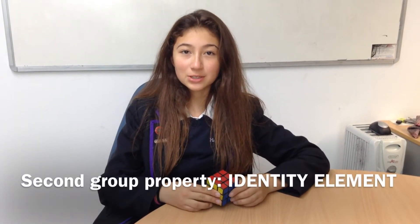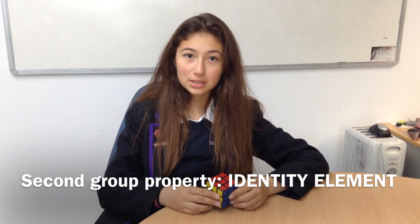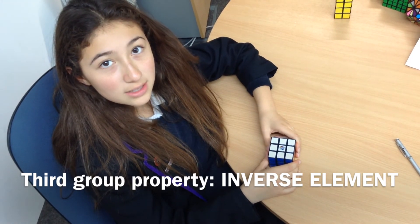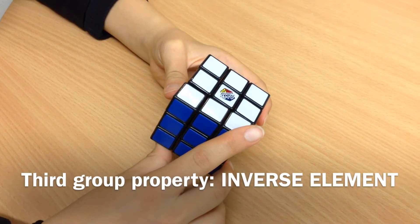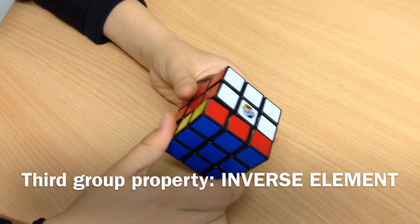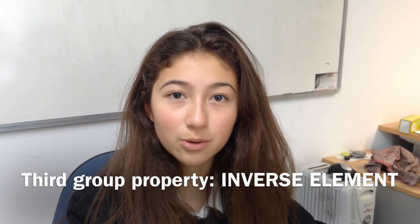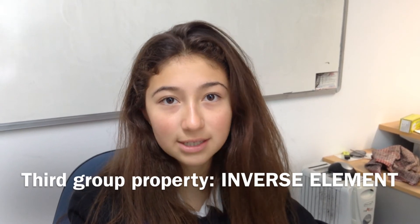The identity element is do nothing, in other words, no permutations. Every one of the six key permutations has an obvious inverse. For example, right clockwise and right anticlockwise. A combination of these two is the same as doing nothing, the identity element.